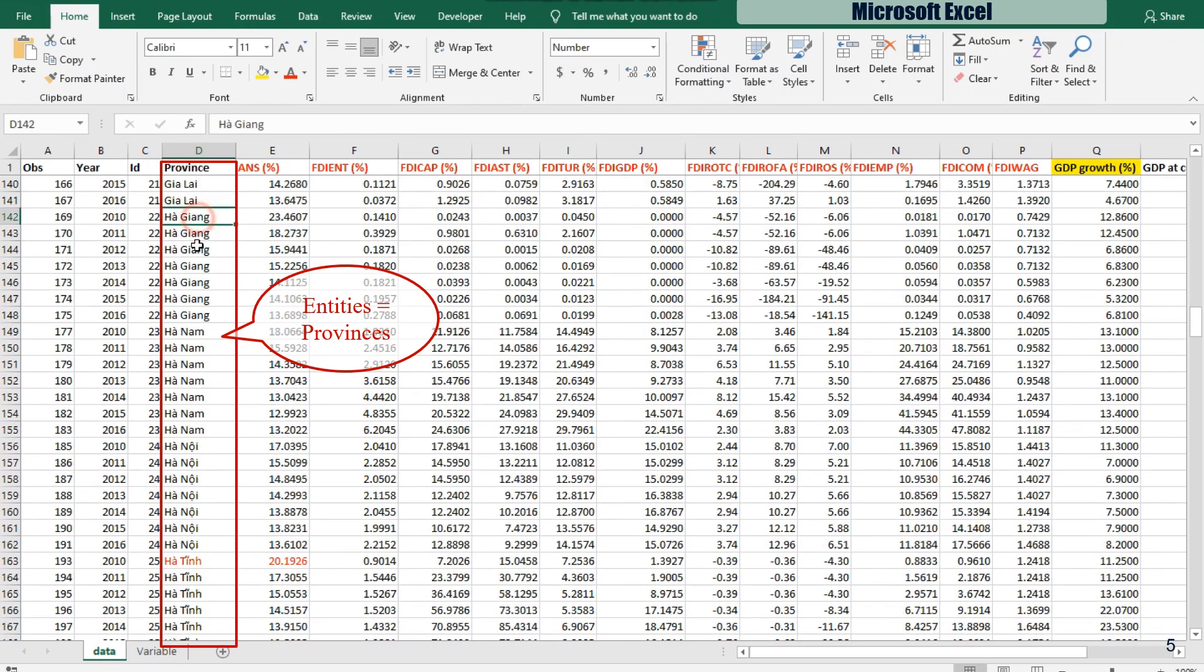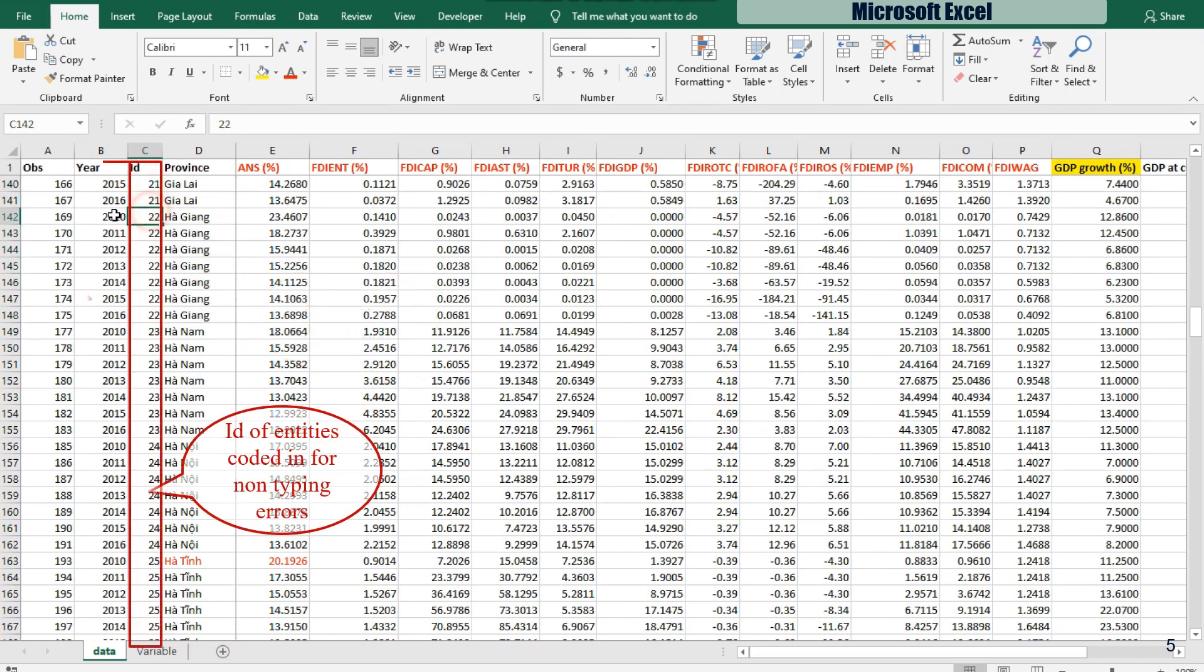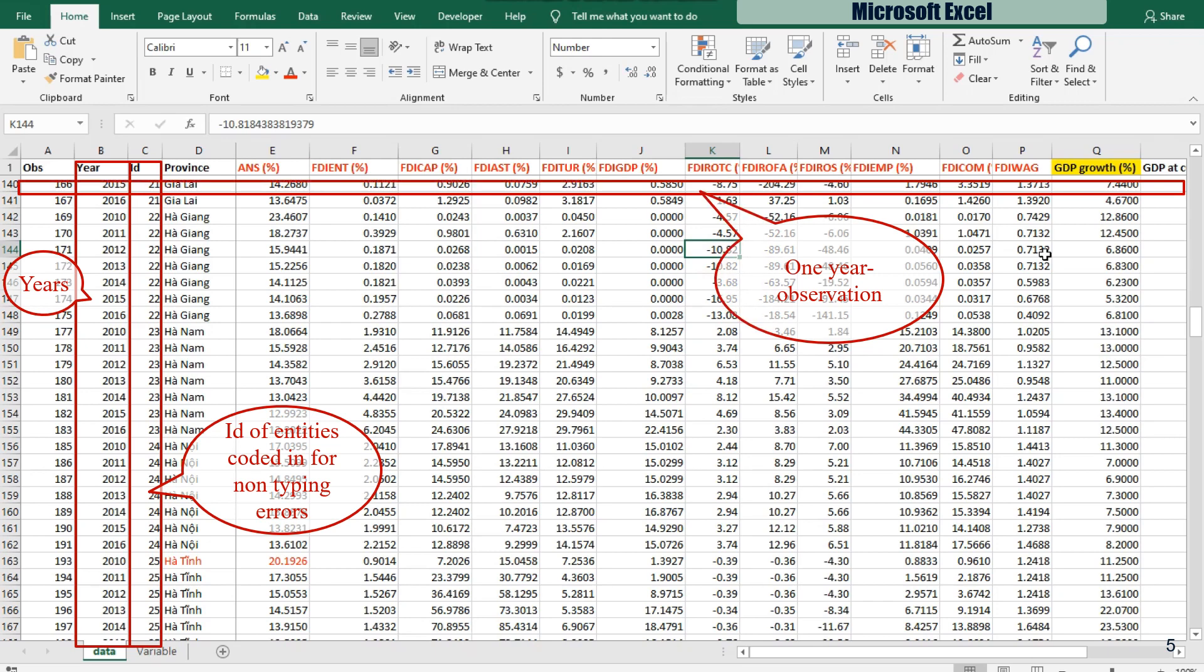Note that you should make attention for assuring that all data of one thing such as one entity are coded exactly the same. If not, Stata will count as another thing or ignore it.